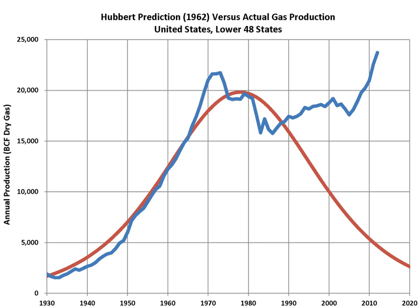Although Hubbert peak theory receives most attention in relation to peak oil production, it has also been applied to other natural resources. Regarding natural gas, Doug Reynolds predicted in 2005 that the North American peak would occur in 2007. Bentley predicted a world decline in conventional gas production from about 2020.